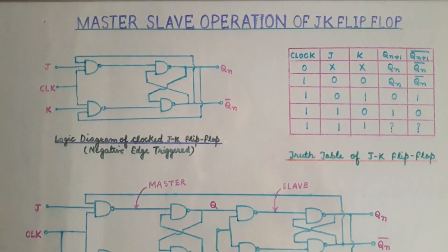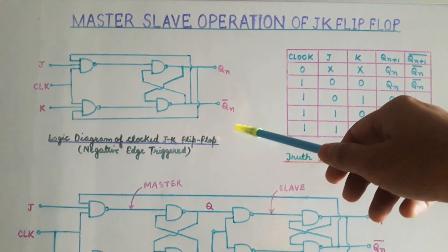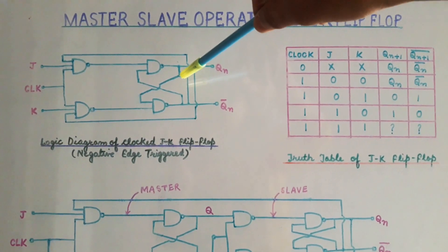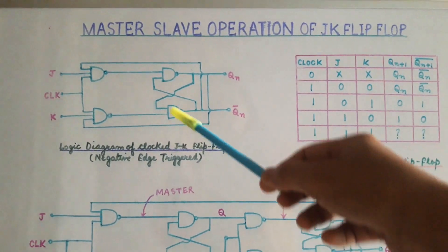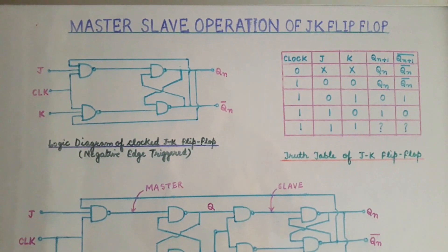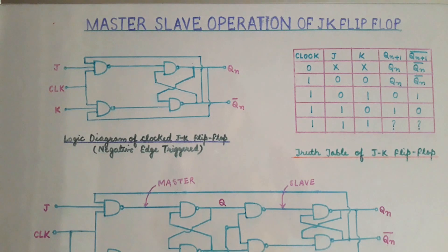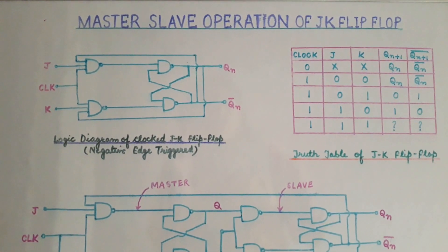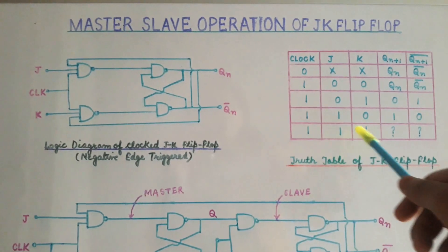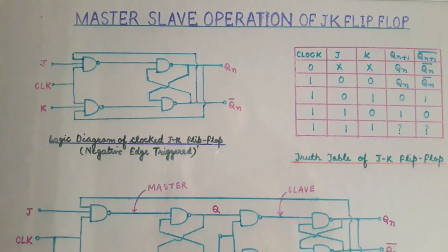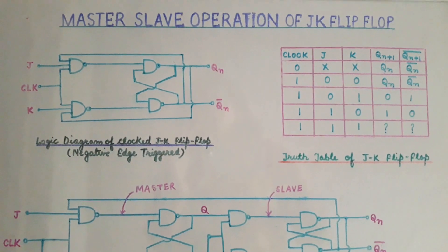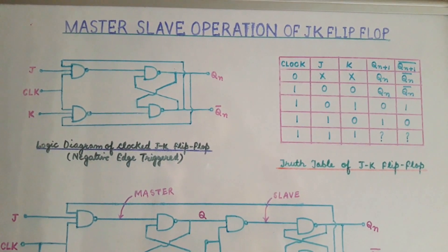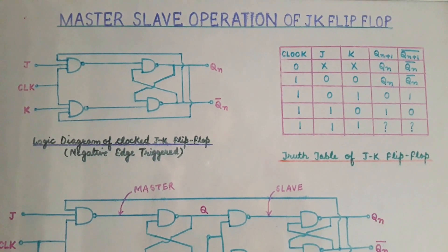In order to overcome this disadvantage we use JK flip-flop. This is the logic diagram of a clocked JK flip-flop which is negative edge triggered. The JK flip-flop overcomes the disadvantage of unpredictable output because of feedback. However, in JK flip-flop we find that when J is 1, K is 1, and the clock is high, the output keeps on changing continuously from 0 to 1.